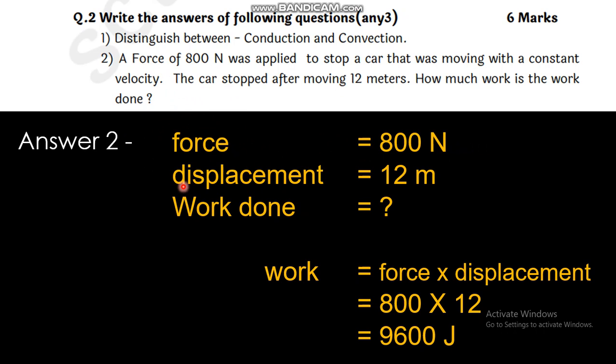What is displacement? Displacement means when the body moves from one place to another, from point A to B suppose. The car is displaced how much distance? 12 meters. What is work done here? Work is equal to force into displacement. Force is 800 N and displacement is 12 meters. So 800 times 12 is 9600 J. This is the unit of work.